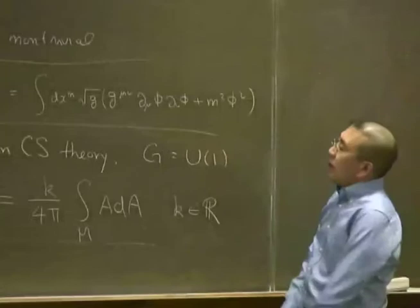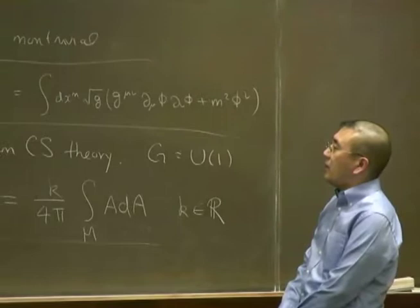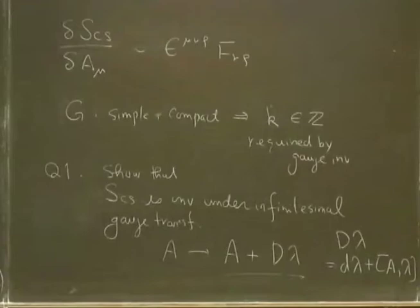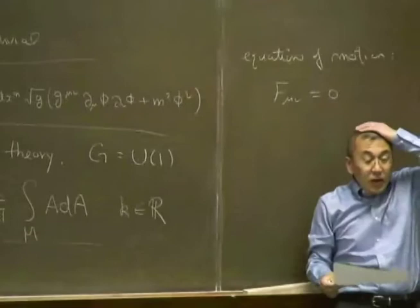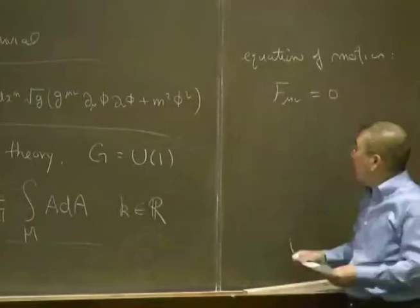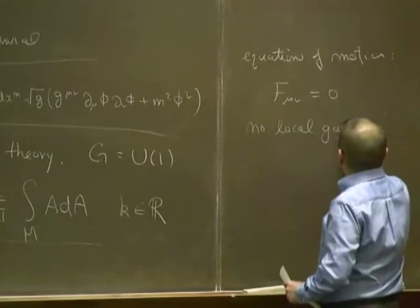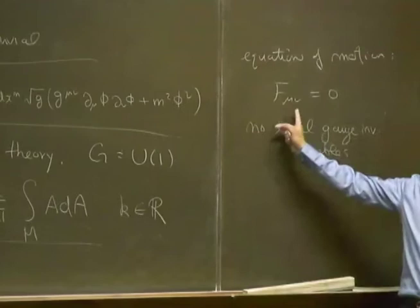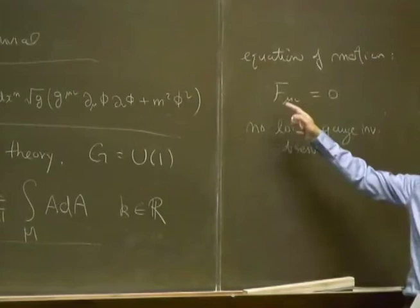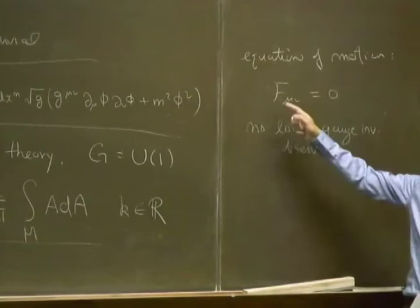The variation of the Chern-Simons action with respect to the gauge field gives rise to the field strength, so the equation of motion is simply F_μν = 0. Since F_μν = 0, there is no local gauge-invariant observable that you can write down, because any local gauge-invariant observable would be a combination of F or its derivatives and their products. If F vanishes by the equation of motion, then there is no such observable.